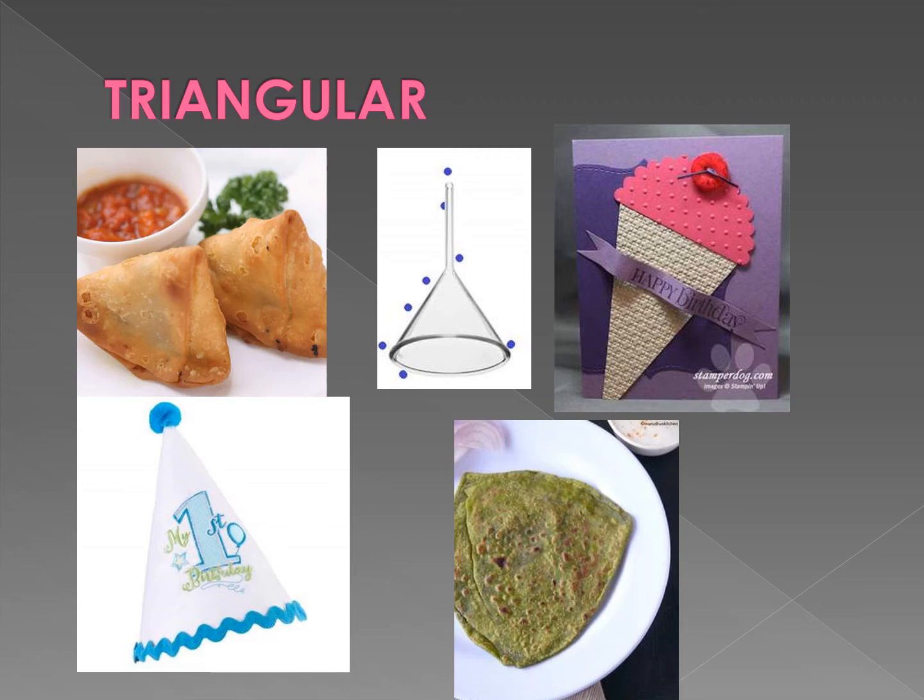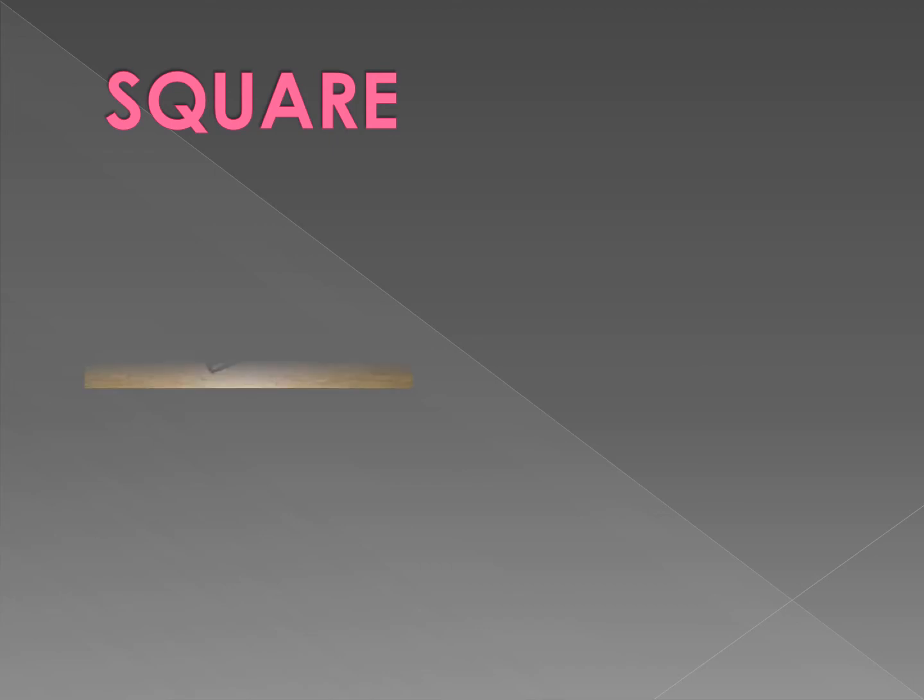It has three corners and three sides. Next is square shape. Square shape is a shape that has four sides and is a closed shape.